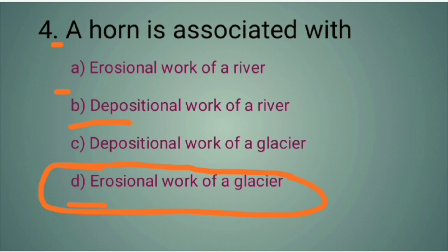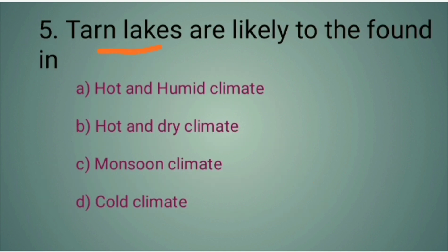Question 5: Thorn jils are likely to be found in which climate? Option A: Hot and humid climate. Option B: Hot and dry climate. Option C: Monsoon climate. Option D: Cold climate. The answer is D. Thorn jils are found in cold climate.